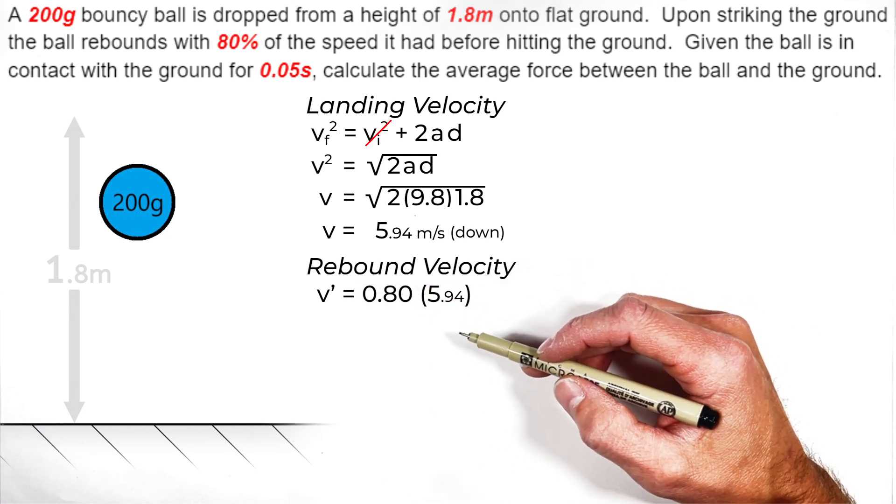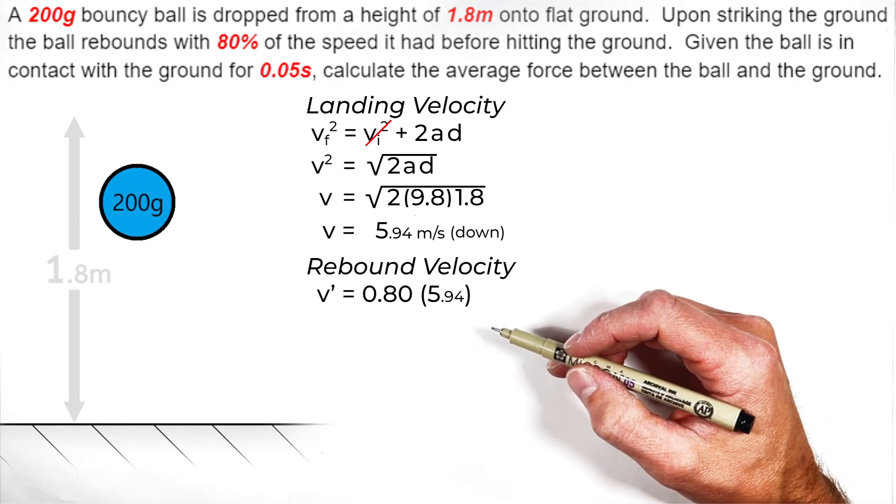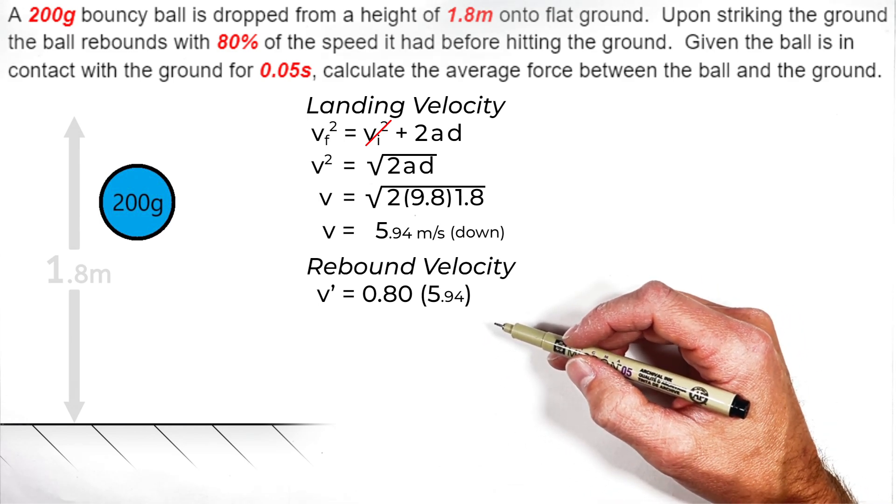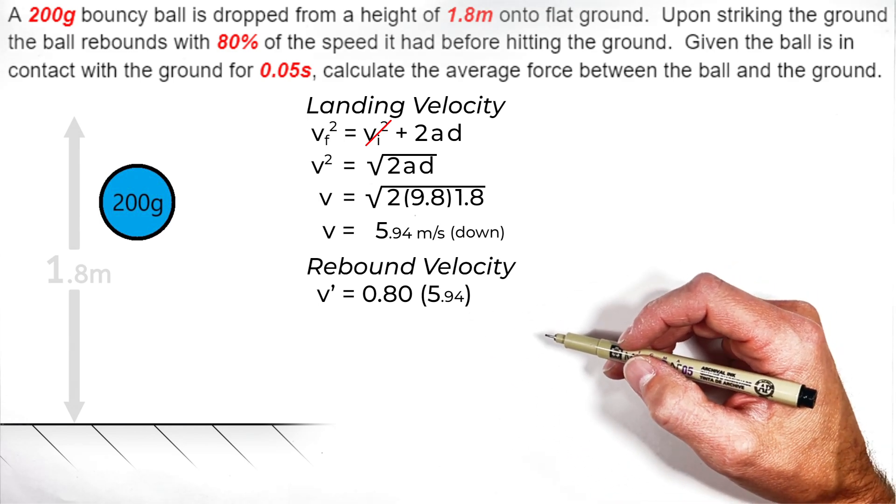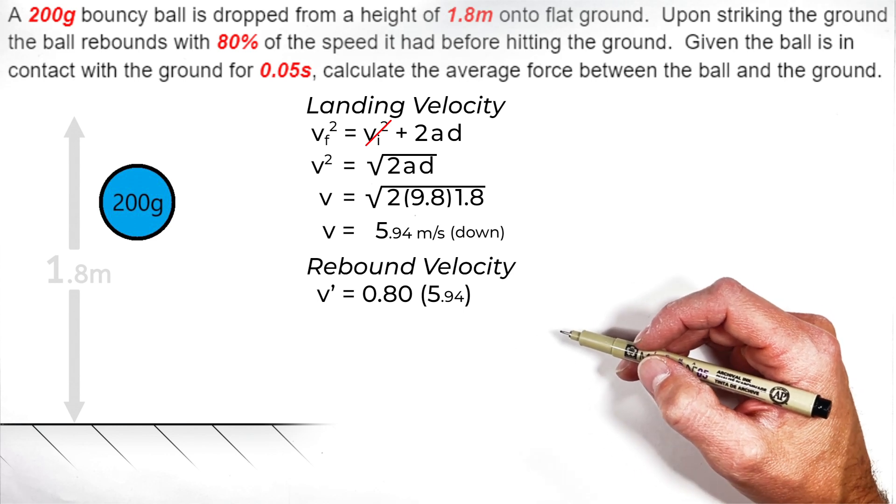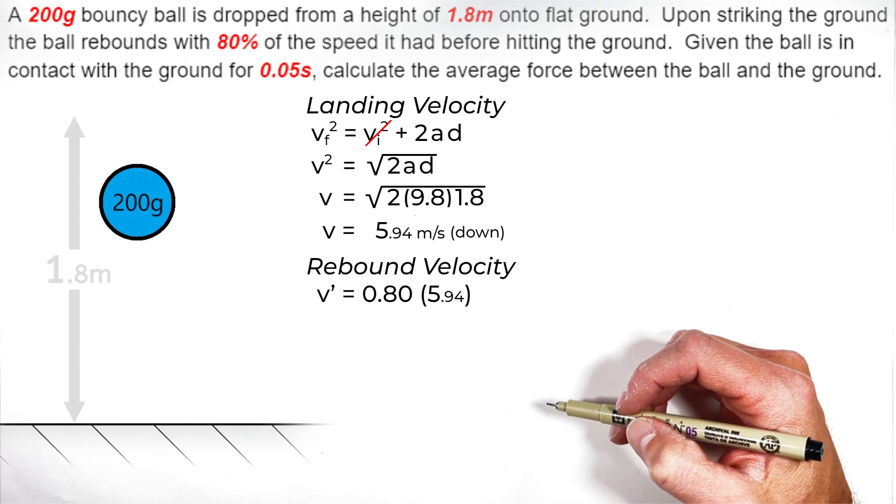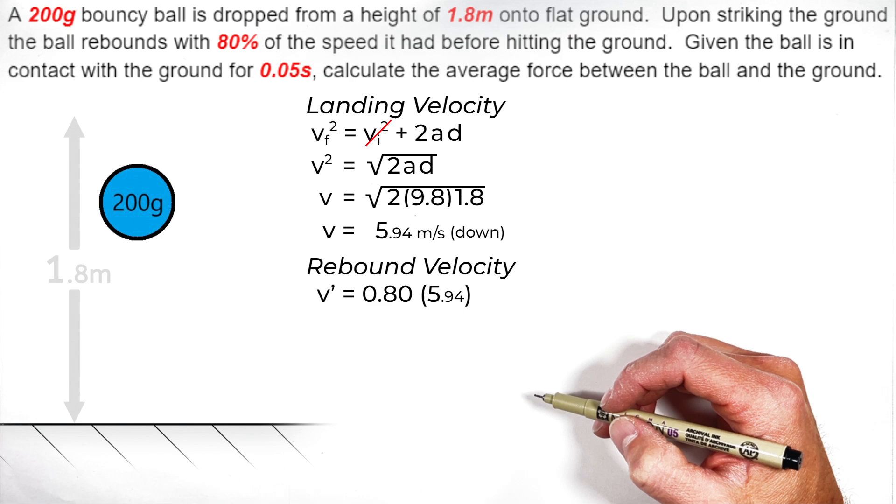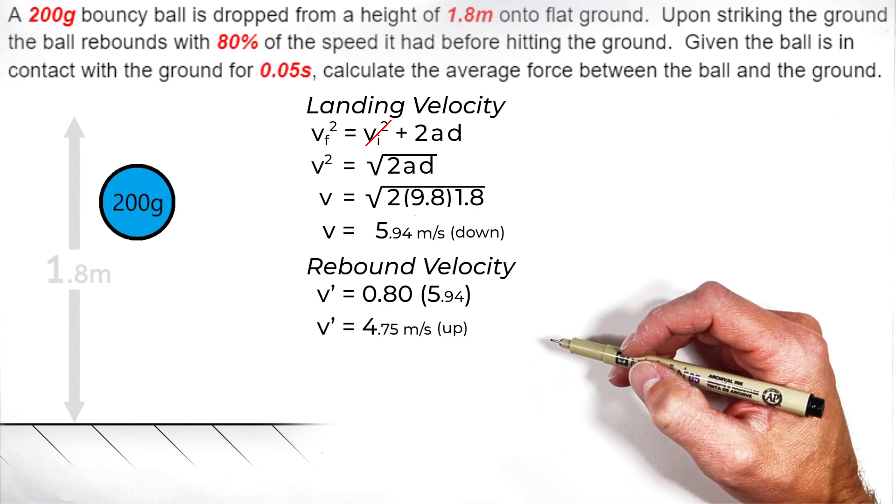We're going to say that rebound velocity is equal to 80% or 0.8 of the velocity when the ball landed. That was 5.94 meters per second, leaving us with a velocity of the ball just after it strikes the ground of 4.75 meters per second.